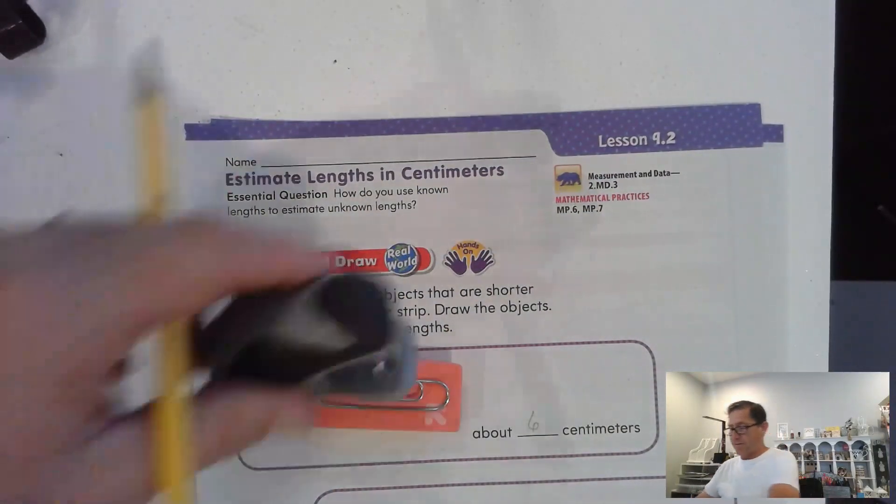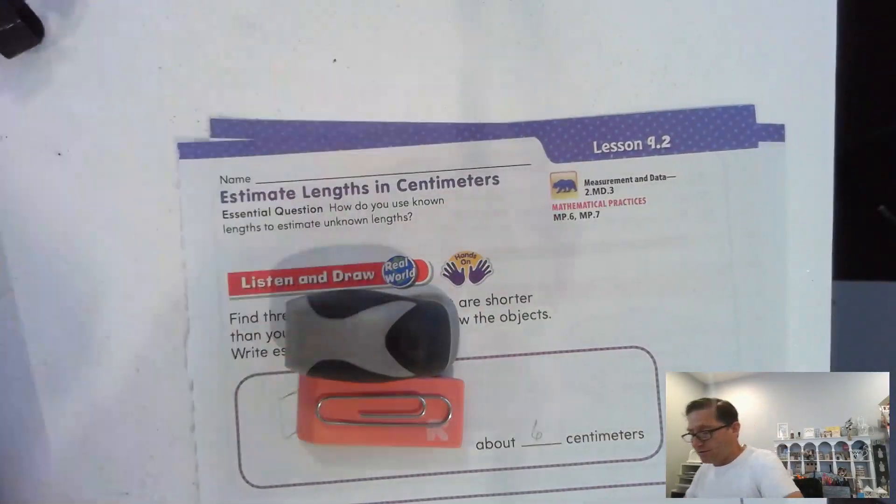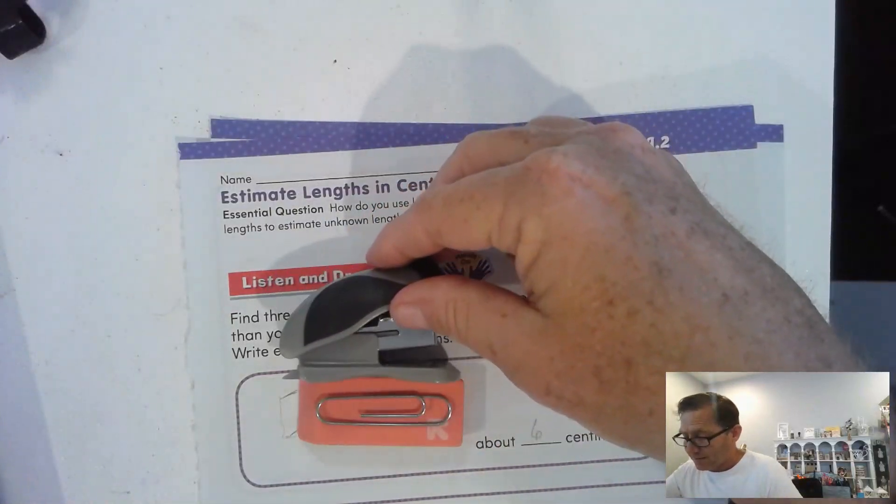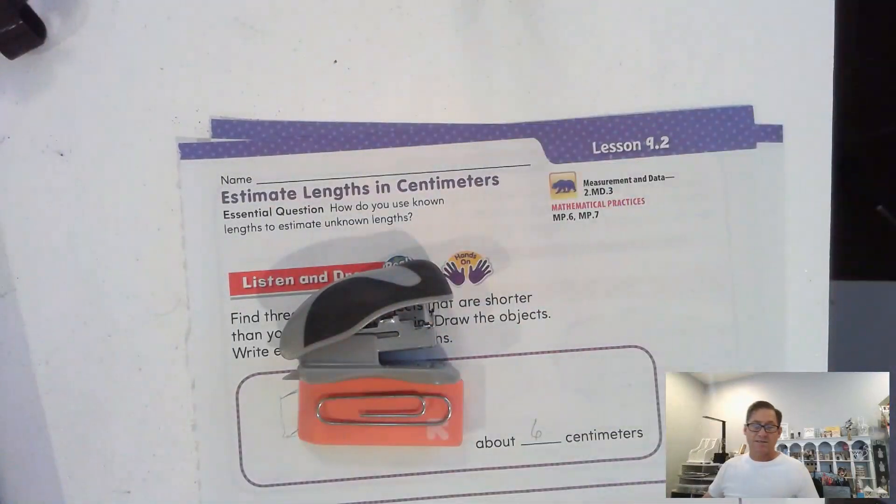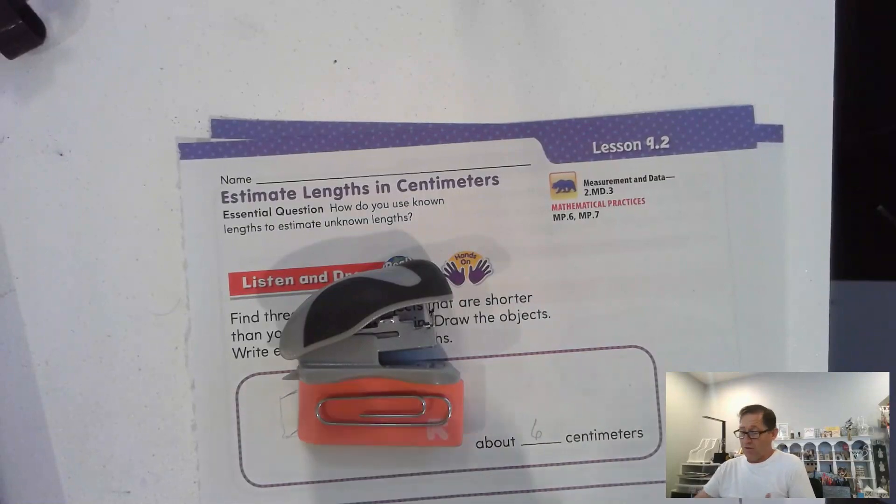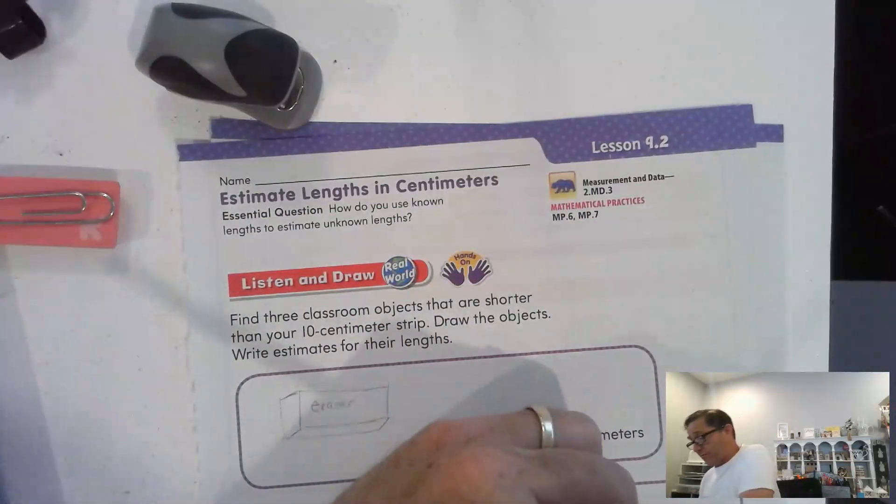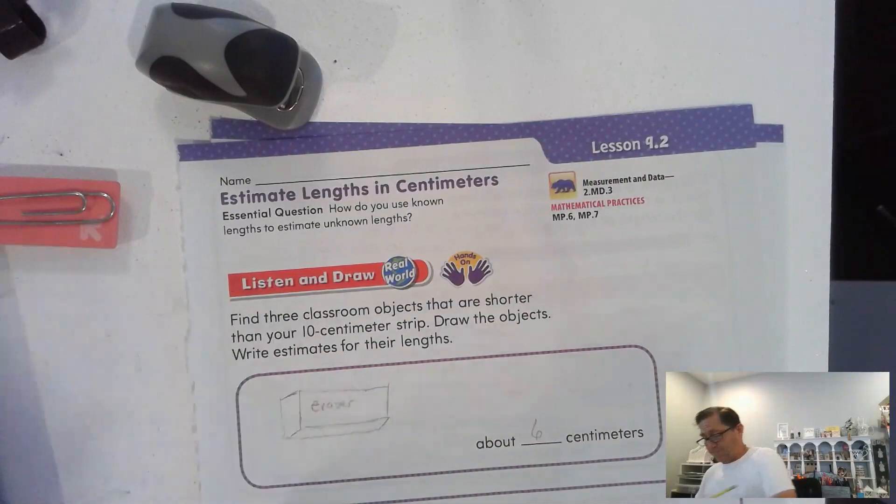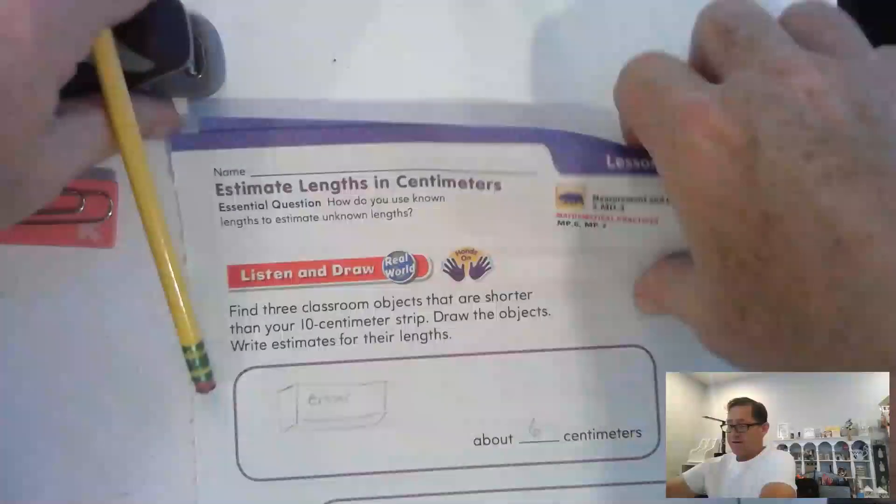Paperclip's a little shorter, and the mini stapler I found is about the same length as all of them. So I'm going to say 6 centimeters for all three. But your estimates might be different.